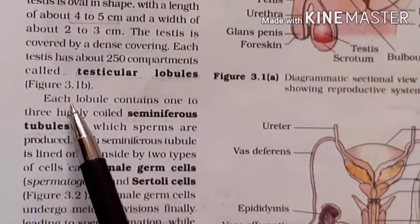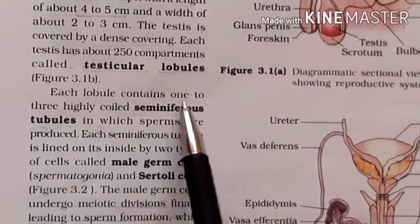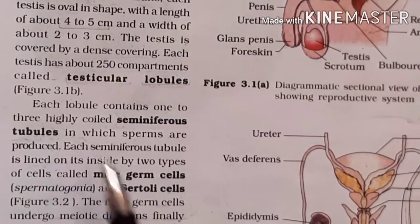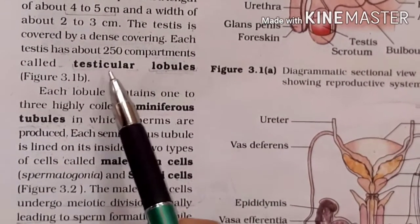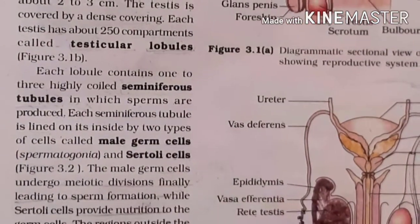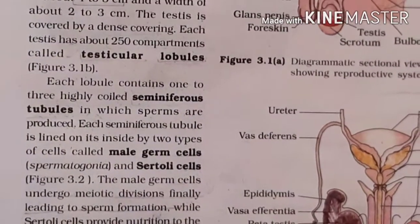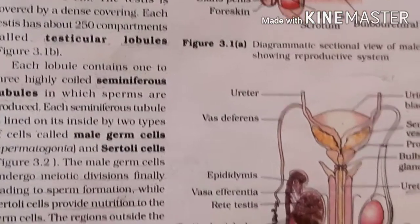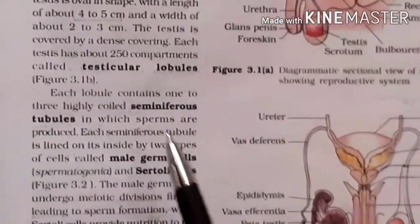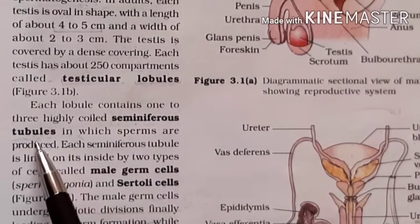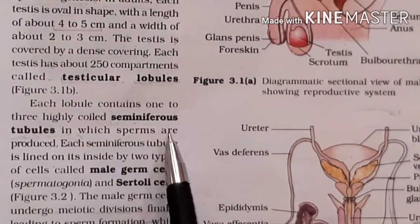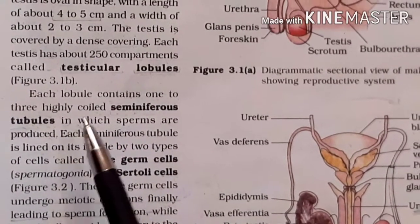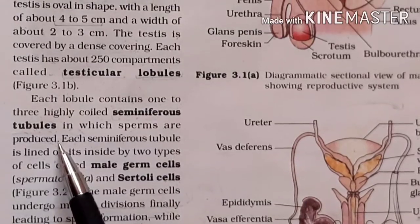Each lobule contains 1 to 3 highly coiled seminiferous tubules — structures that are completely coiled like a tube. These are called seminiferous tubules, and sperm are produced inside them.